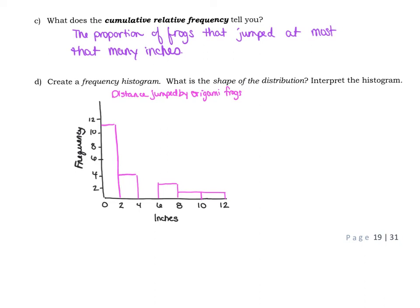So what is the shape of that histogram? How would you describe it? Hopefully you will say that it is skewed to the right. And then interpret the histogram, so what is something that you can say about what this tells you? There are lots of things you can say. What kind of stands out to me is that the vast majority of the frogs jumped less than two inches.